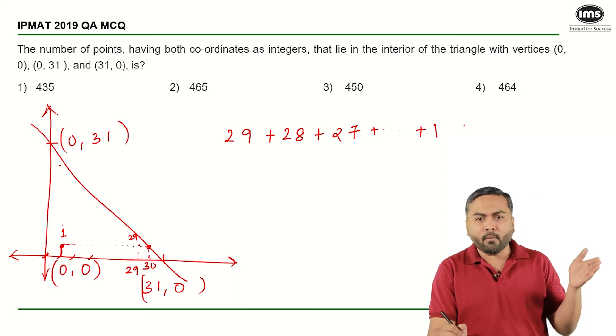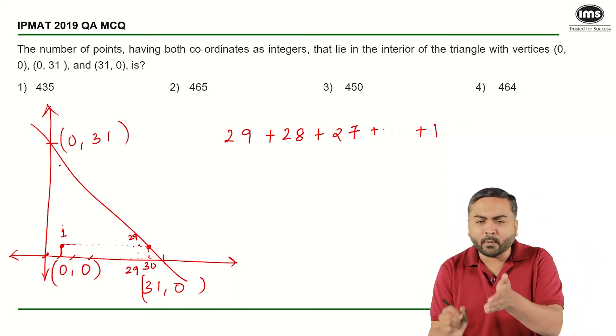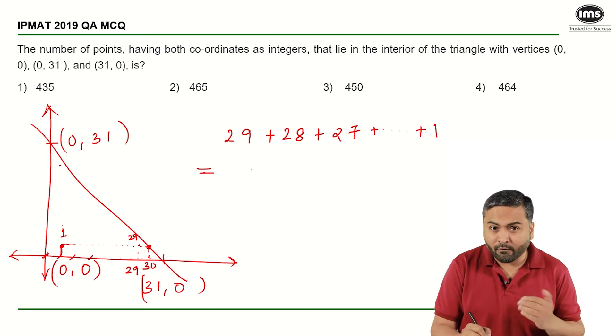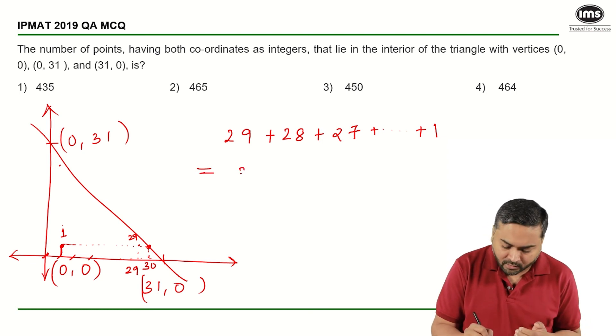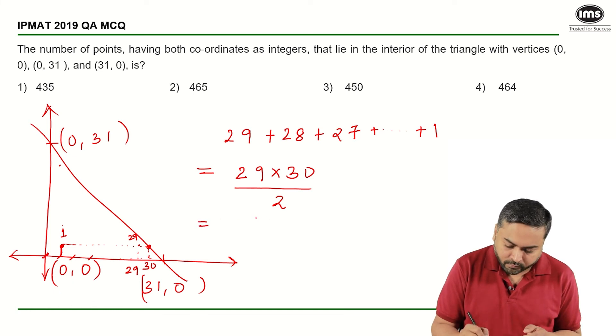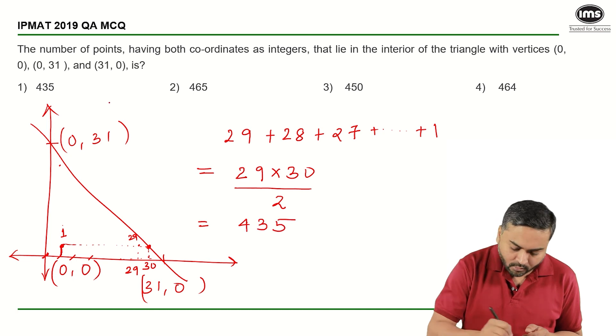So I will have to go from 29 plus 28 plus 27 and so on till 1, and this is equal to summation of first 29 natural numbers, that is 29 into 30 upon 2, that is 29 into 15, that is 290 and 145, that is 435. So that is the correct answer.